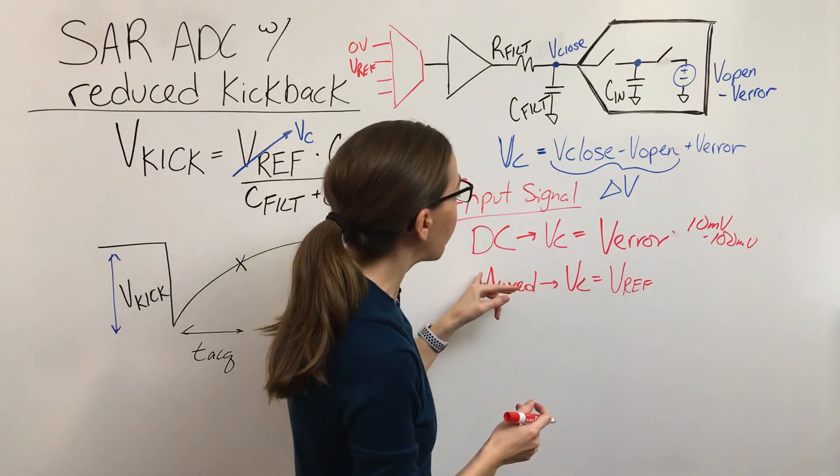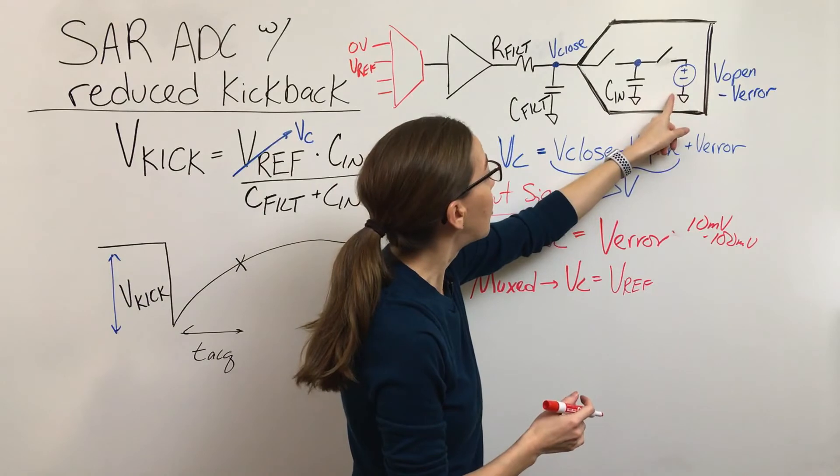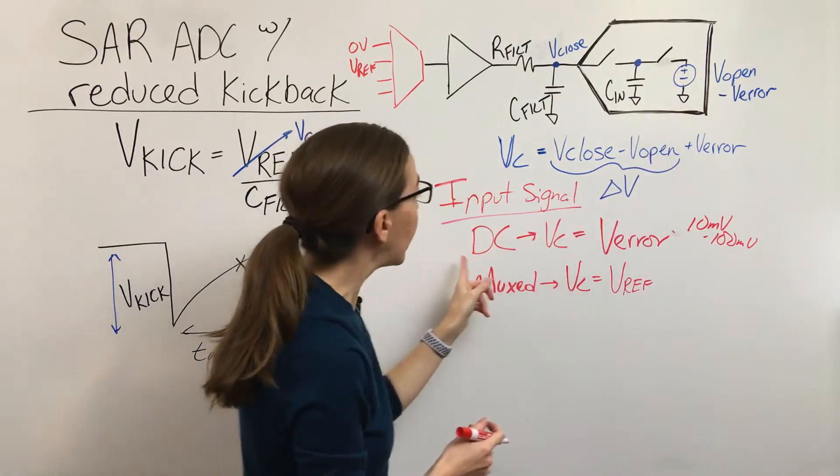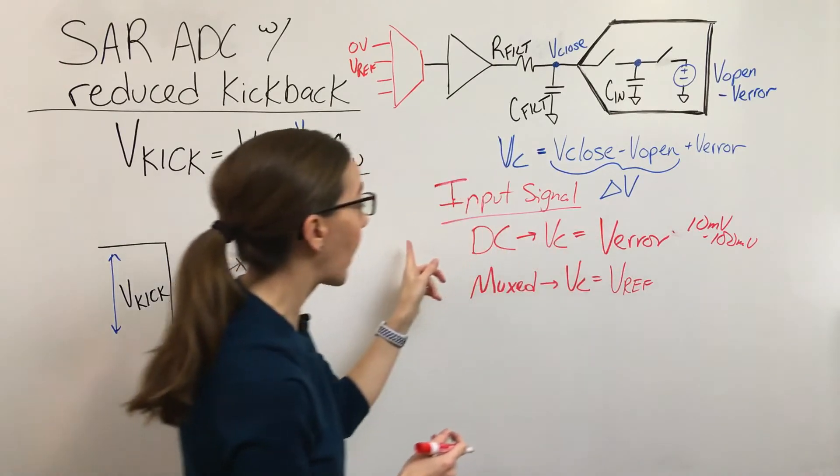So in this case, for a muxed case, you don't really get much benefit of this circuit. It's not really doing anything helpful. Whereas here it's providing a lot of value as far as kickback settling.